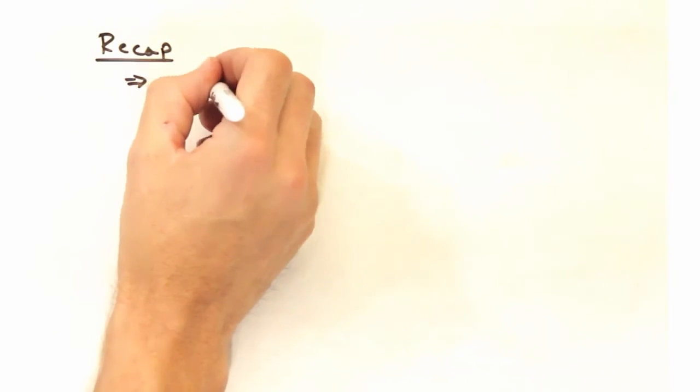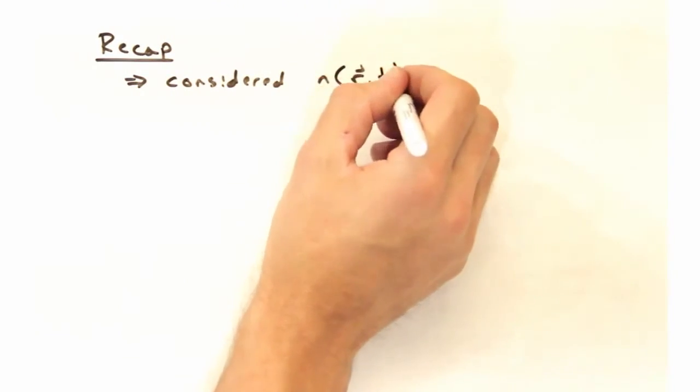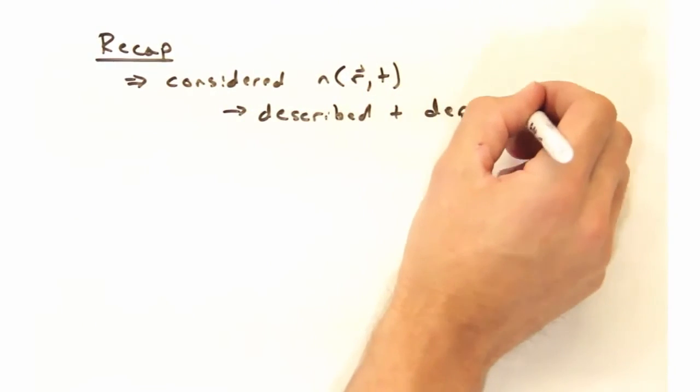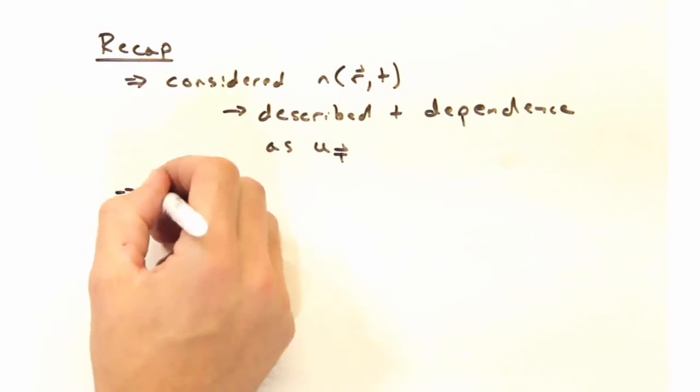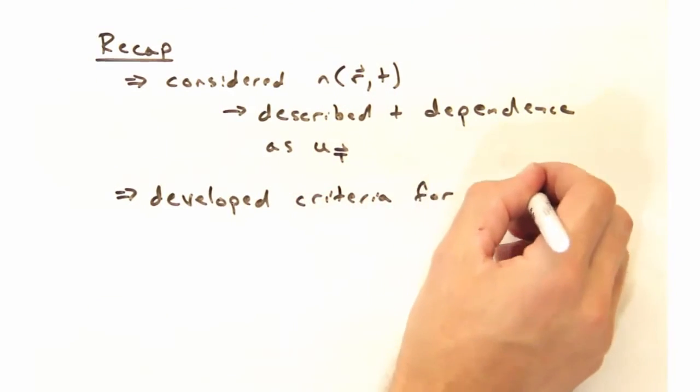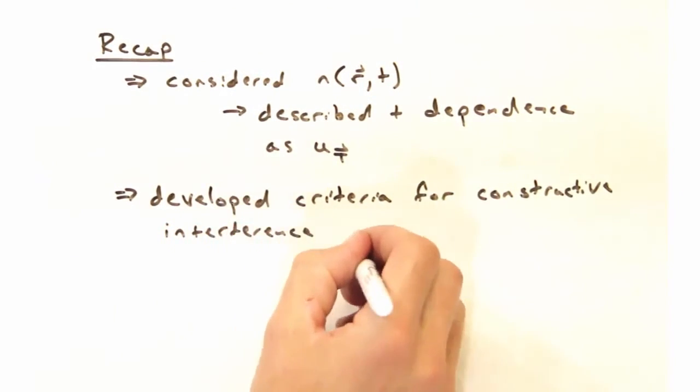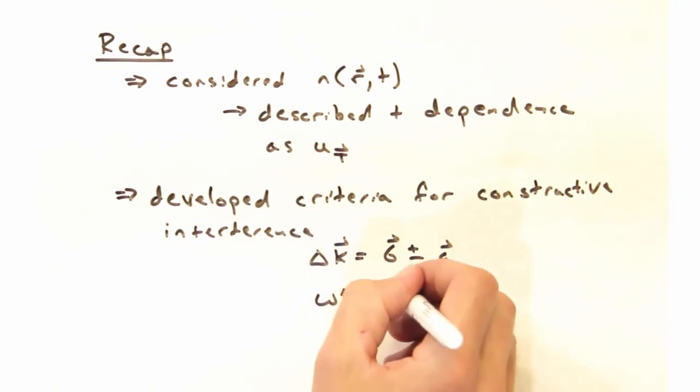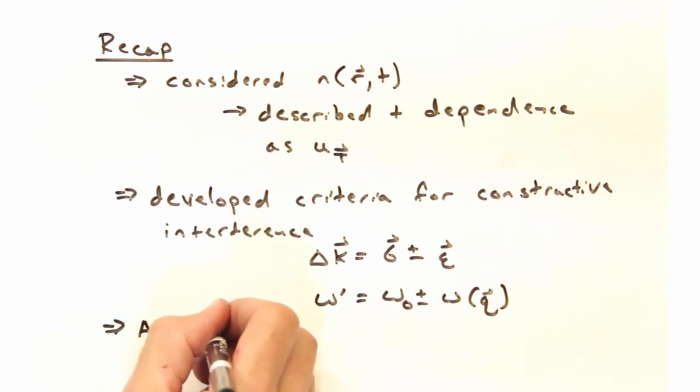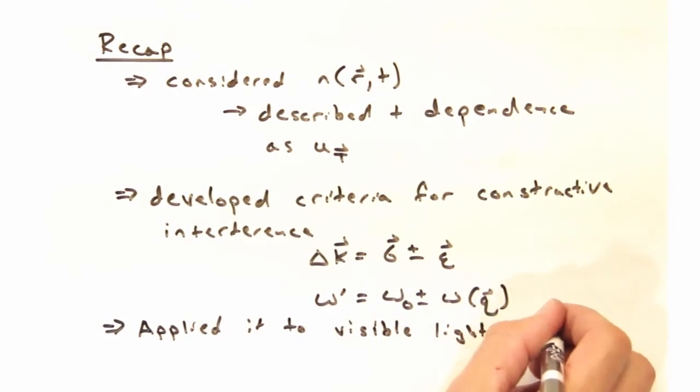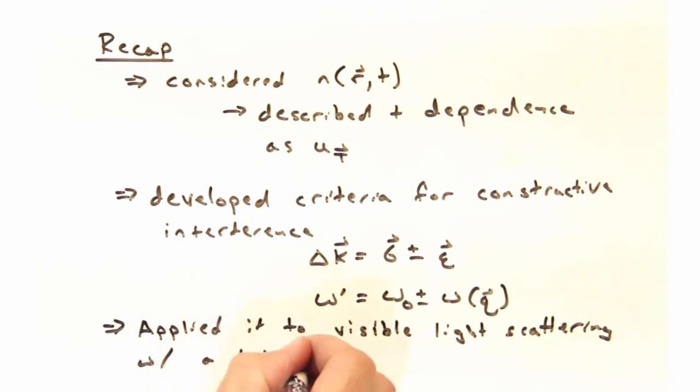So to recap, we started by thinking about the scattering density now not just as a function of position, but also as a function of time. And we were able to describe the time dependence as our u of t that we developed simply for phonons. When we brought that into our expression for amplitude, we ended up developing criteria for constructive interference, namely that delta k needs to equal g plus or minus q, and that the final frequency better equal the original frequency plus or minus the frequency of the q vector. And to see how these expressions really play out in real inelastic scattering experiments, we took this and applied it to visible light scattering using a frequency resolve detector. And from that, we were able to see that we could actually identify specific phonon modes within the sample.